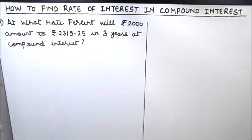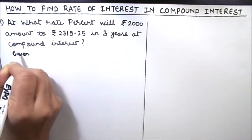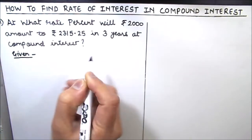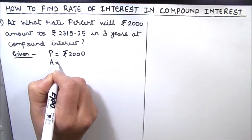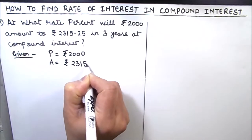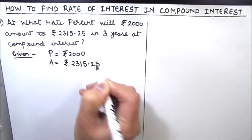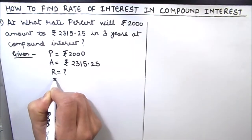Our first question is: at what rate percent will 2000 rupees amount to 2315.25 rupees in three years at compound interest? First of all, we'll write what is given. Principal is 2000 rupees, amount is 2315.25 rupees, rate of interest we need to find out, and time is three years.